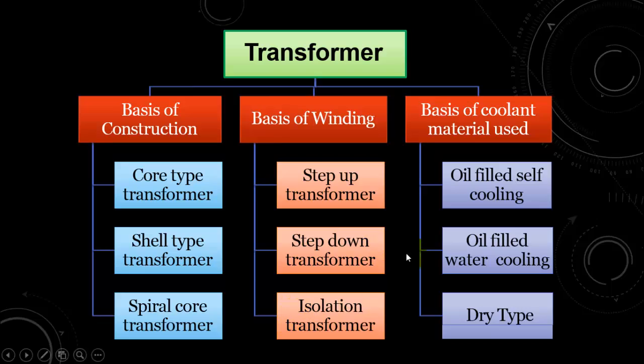Let us quickly move to different types of transformers. So basically the transformer has been characterized into three main types. Based on construction, the transformer is either core type, shell type, or the spiral core transformer. Similarly, based on the windings, it can be a step-up transformer, step-down transformer, or the isolation transformer in which there is no voltage level conversion, only require isolation between the primary and the secondary windings.